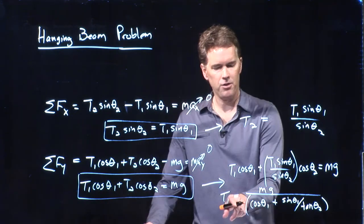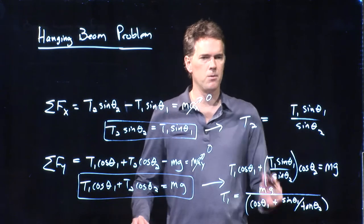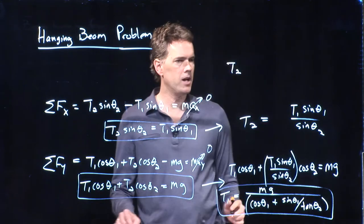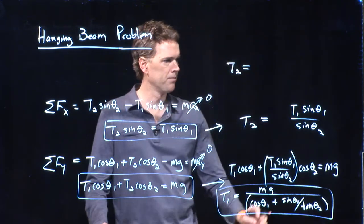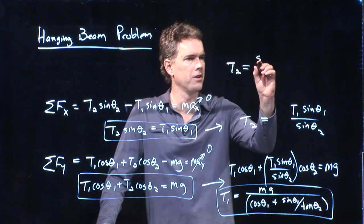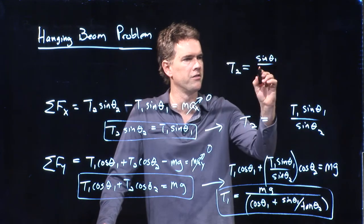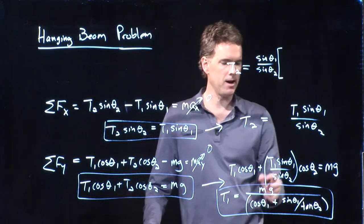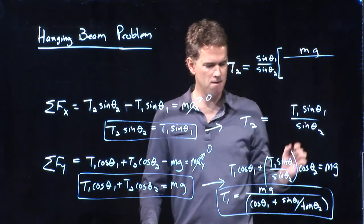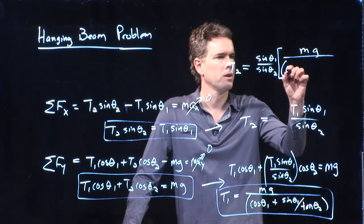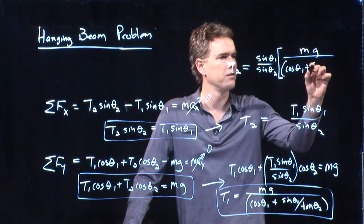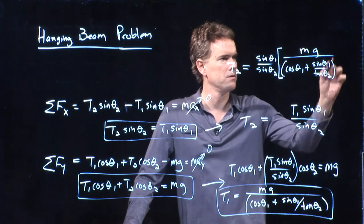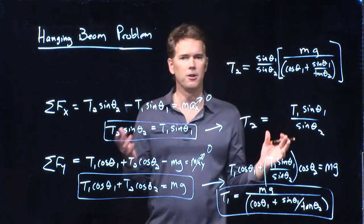Let's put a box around the T1 equation. Now T2 is going to be sine theta-1 over sine theta-2 multiplied by T1, which gives T2 equals (sine theta-1 / sine theta-2) times mg divided by (cosine theta-1 plus sine theta-1 over tangent theta-2). Now you can plug in all your numbers and get an answer.